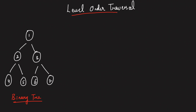So what is a Level Order Traversal? This is the binary tree that you are seeing over here. If I talk about levels, this is the first level. So if I write down 1, then if I write down the next level from left to right, it will be 2, 3.